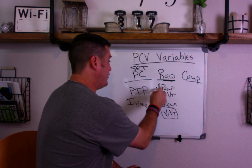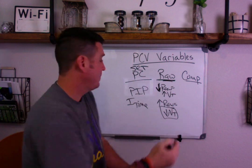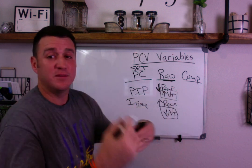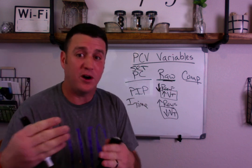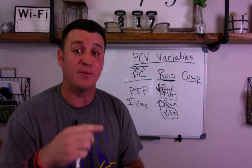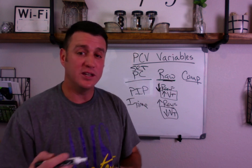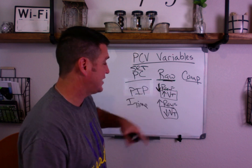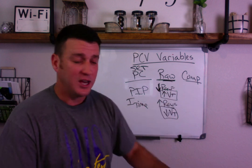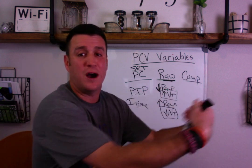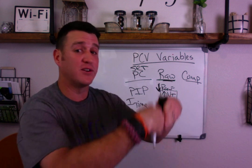On the flip side, if you have a status asthmaticus patient who comes in extremely shut down and then starts to open up, tidal volume goes up. When tidal volume goes up, minute volume goes up; when minute volume goes up, CO2 goes down; when CO2 goes down, pH goes up. So you have to watch this — when your status asthmaticus patient's bronchoconstriction improves, you must make sure you're not delivering tidal volumes that are too high, because your patient can become alkalotic.